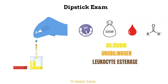Leukocyte esterase is an enzyme present in white blood cells, so the presence of this substance in the urine indicates the presence of white blood cells and a possible infection. The dipstick exam also tests for nitrites, because the compound nitrate is found in different foods and bacteria can convert nitrate to nitrites. Therefore the presence of nitrite in the urine usually indicates a bacterial infection.